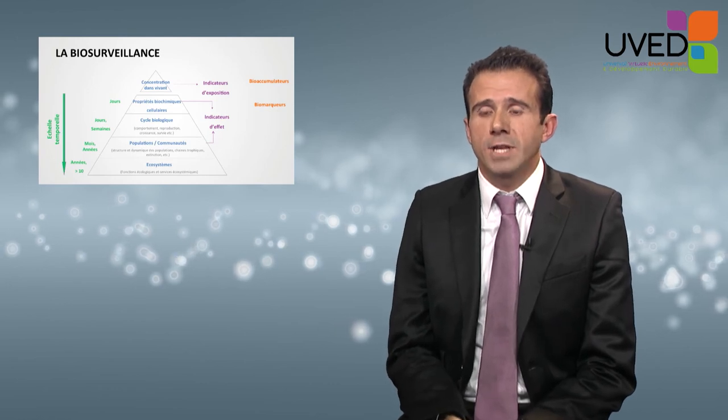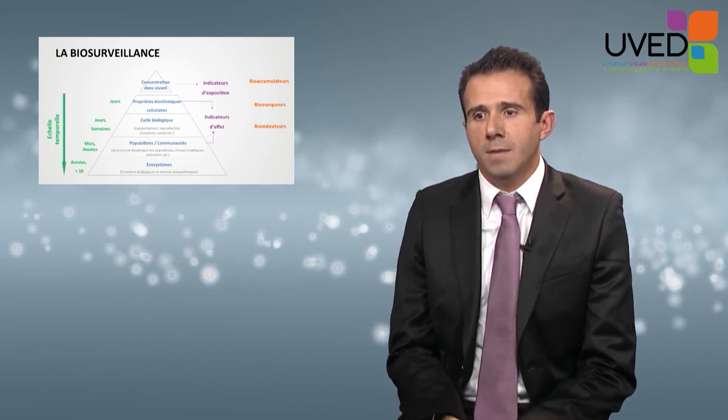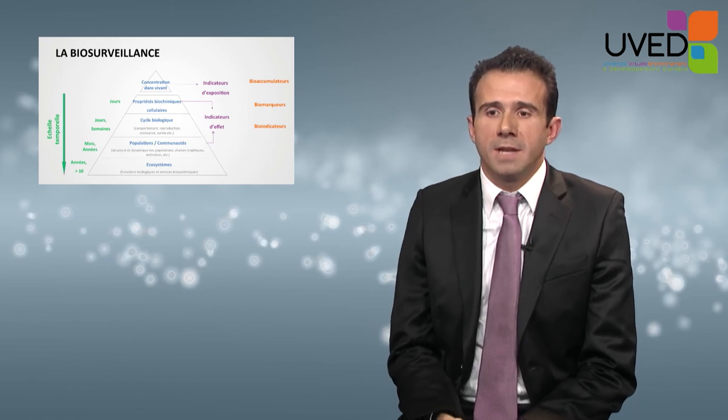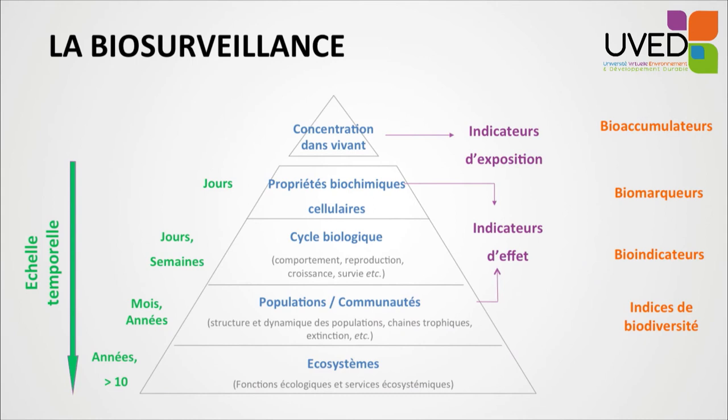If the disruption is important, then we can look at the biological cycle of the organisms — what we call bioindicators. The idea is to assess changes in the behavior, reproduction, growth, or survival of a type of organism that has been identified. On the upper level, we can also study populations and communities. Here we talk about biodiversity indexes.